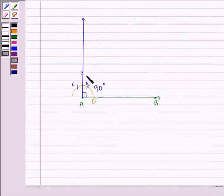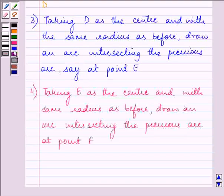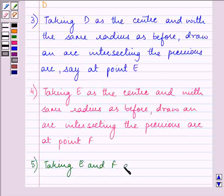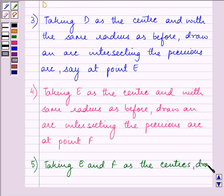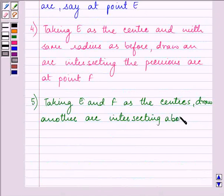Now, taking E and F as centers, draw another arc and let's name the intersection G. Taking E and F as centers, draw arcs intersecting above the points at G.